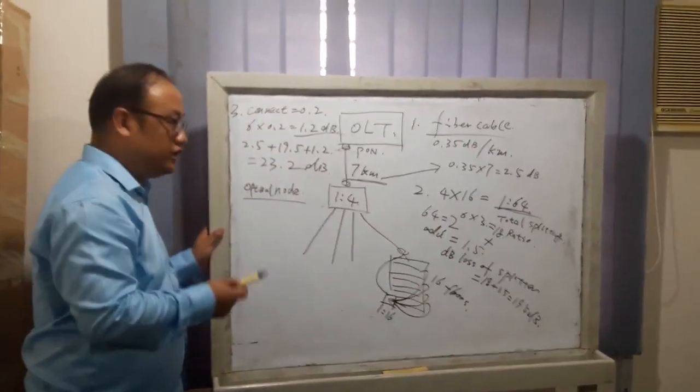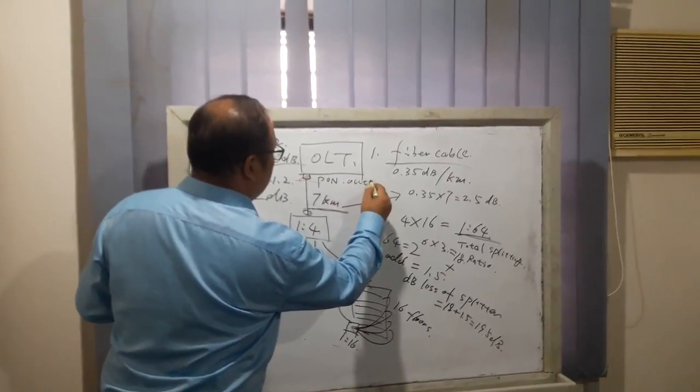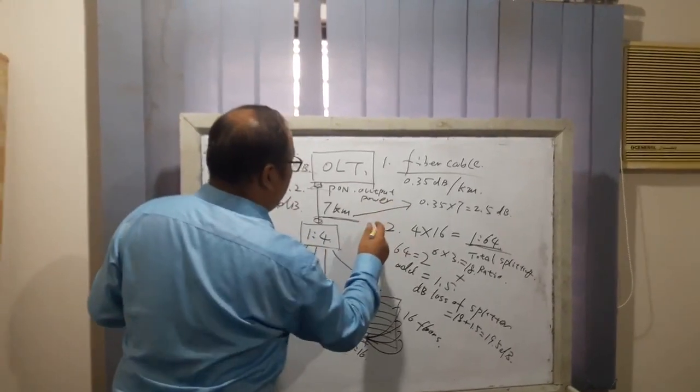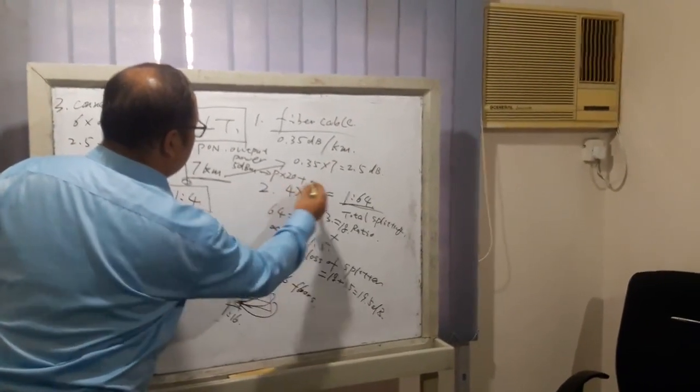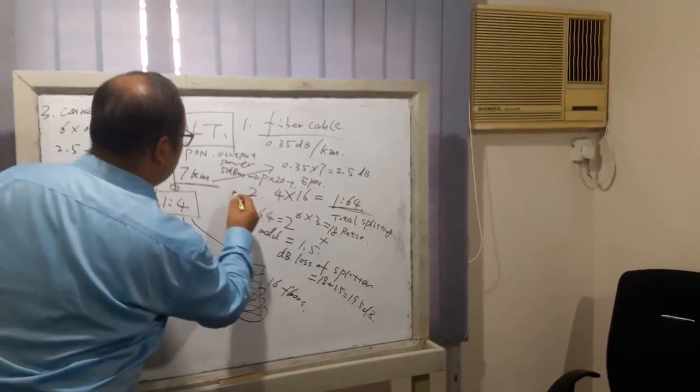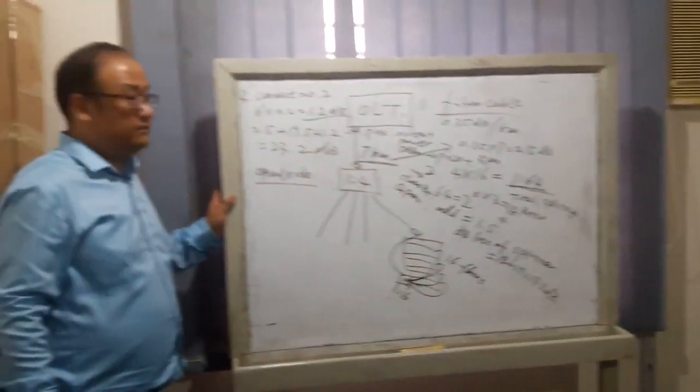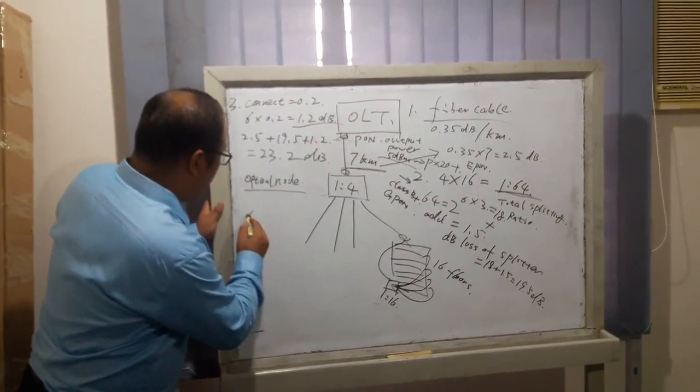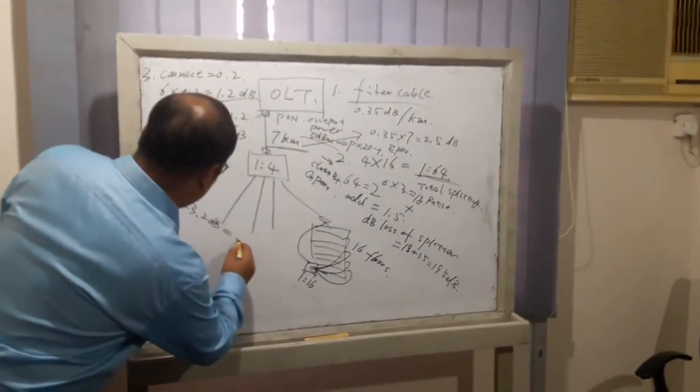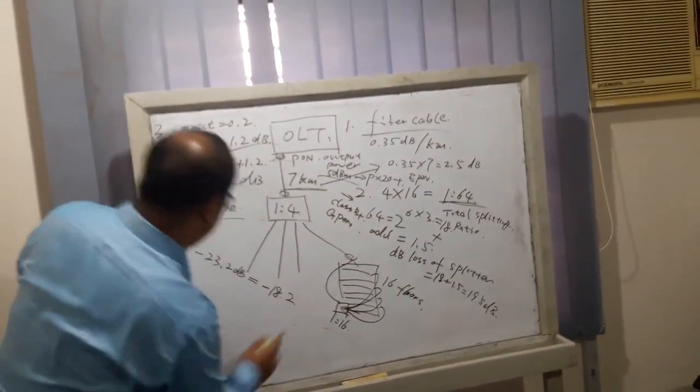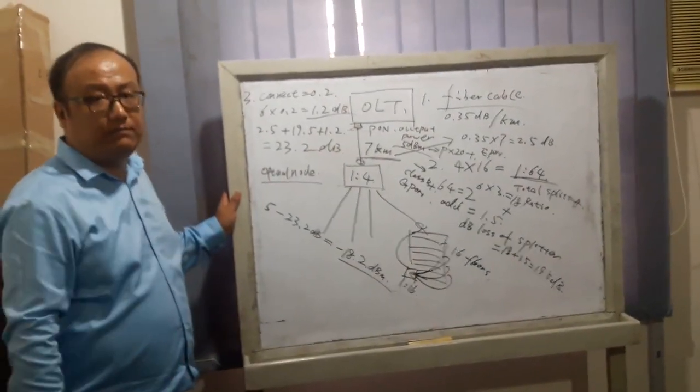That's the total attenuation of the whole distributed system. As we know, the PON output power for E-PON, B-PON, and G-PON optical module output power is 5 dBm. 5 dBm minus 23.2 dB equals minus 18.2 dBm. This is the ONU received optical power.